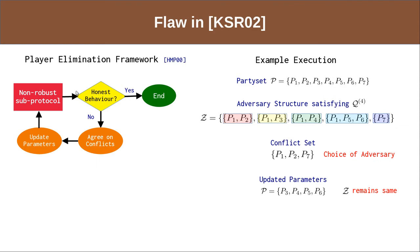However, it is easy to see that in this case the adversary structure remains the same after the update, because the conflict set has a non-empty overlap with every set in the adversary structure. Their protocol then deploys non-robust sub-protocols along with protocols for asynchronous reliable broadcast and asynchronous Byzantine agreement among the updated party set. However, the updated parties and adversary structure do not satisfy the Q3 condition, as three party sets in the adversary structure cover the entire updated party set. Since Q3 is a necessary condition for asynchronous reliable broadcast and Byzantine agreement, their protocol cannot be secure.